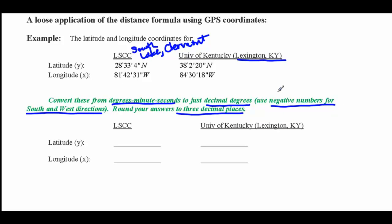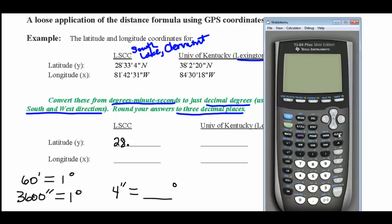In order to do that conversion, I have to know that 60 minutes equals one degree, and 3600 seconds equals one degree. So for the latitude of Lake Sumter State College, I'm going to have 28 because that is in degrees, and then some decimal part to represent 33 minutes, 4 seconds. To convert the seconds, we'll start with the 4 seconds. To get the number of degrees, I'm going to take 4 and divide it by 3600 so that I end up with the number of seconds in a decimal number. So 4 divided by 3600.